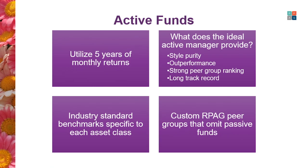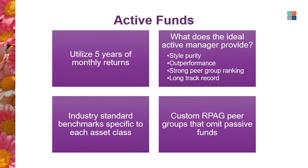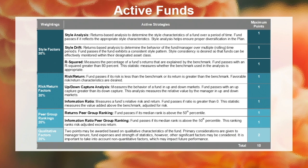RPAG uses industry-standard benchmarks specific to each asset class — Russell indices for U.S. equities, MSCI for international, Bloomberg Barclays for fixed income, and so on. RPAG also creates custom peer groups that omit passive funds from the space to create an apples-to-apples comparison and a more competitive peer group environment. The active scorecard follows that 80% quantitative, 20% qualitative split, with 30% weighted to style, 30% to risk return factors, and 20% to peer group rankings.